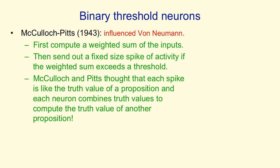McCulloch and Pitts thought that the spikes were like the truth values of propositions. So each neuron is combining the truth values it gets from other neurons to produce a truth value of its own, and that's like combining some propositions to compute the truth value of another proposition.